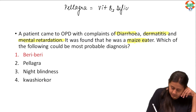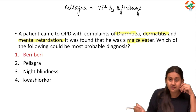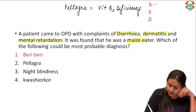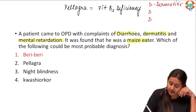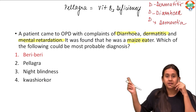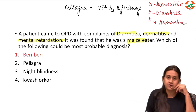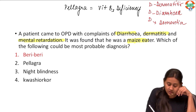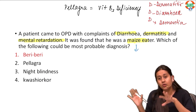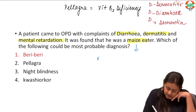Pellagra, which is vitamin B3 deficiency, has a very classical triad: dermatitis present on the sun-exposed area, diarrhea, and dementia. This is a very classical feature of pellagra. Now, what is the significance of maize eater? Those who take maize as the only thing in their diet — maize is deficient in tryptophan.